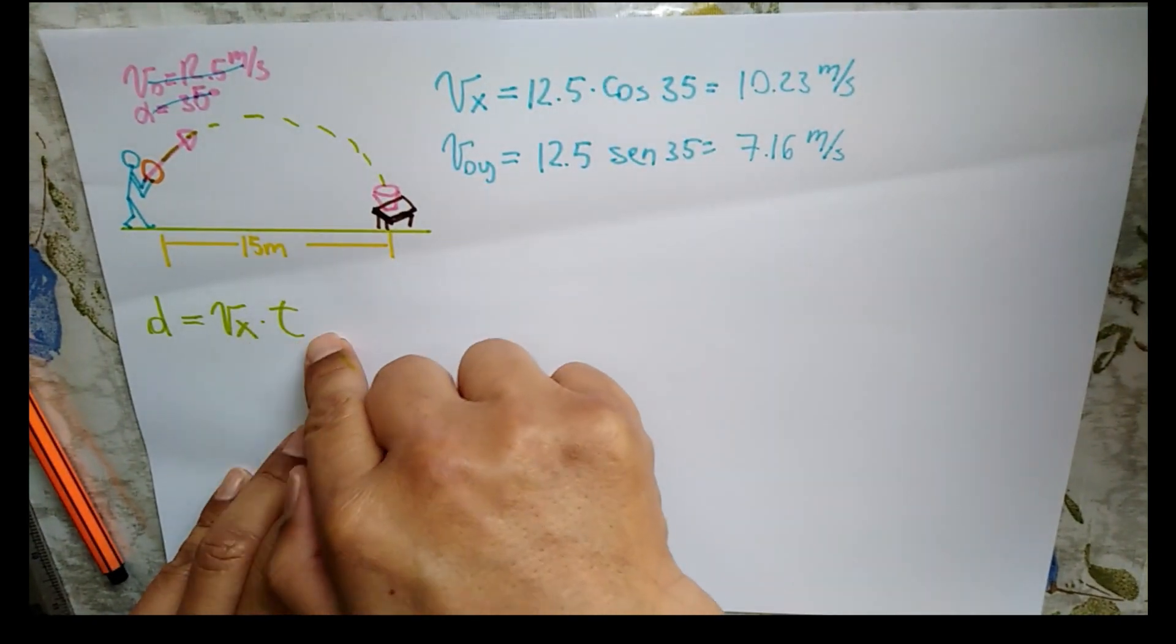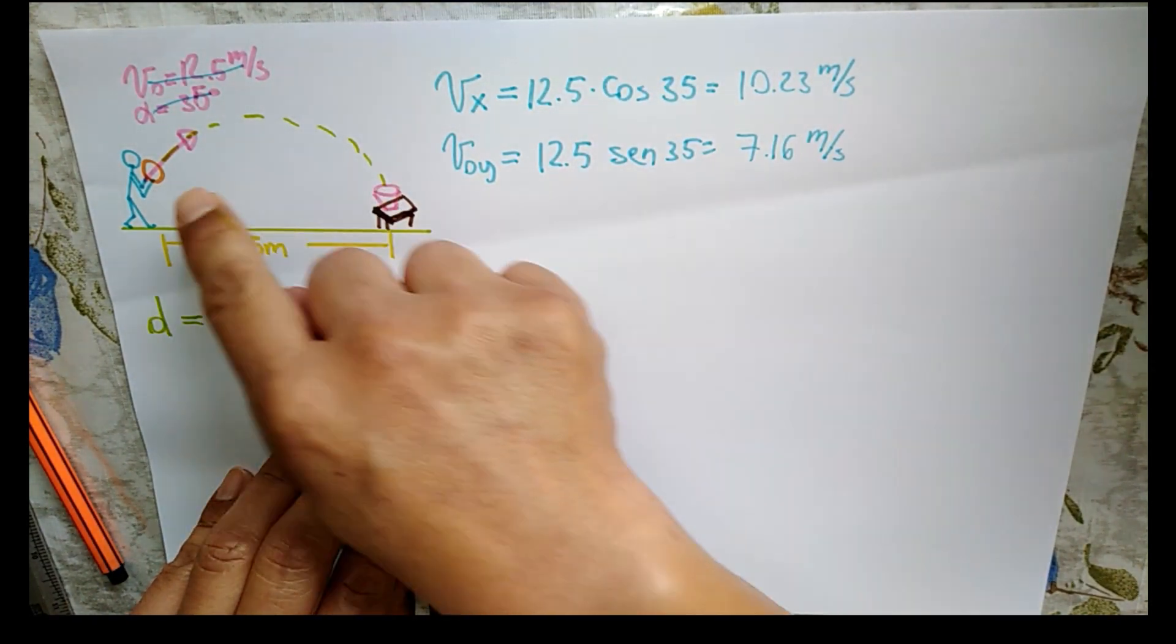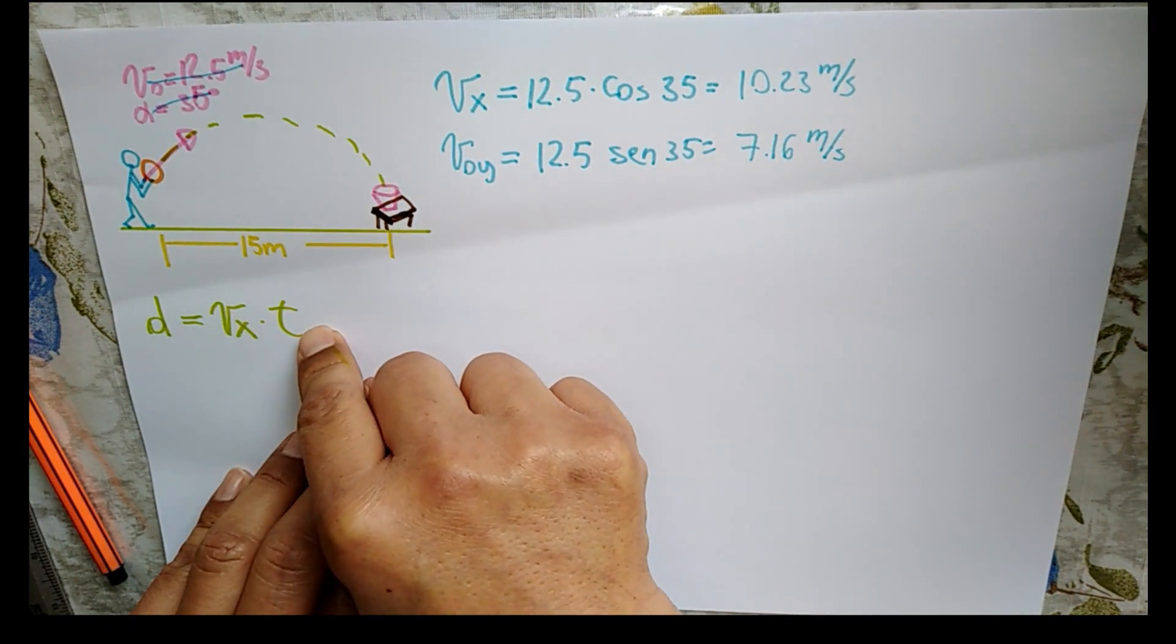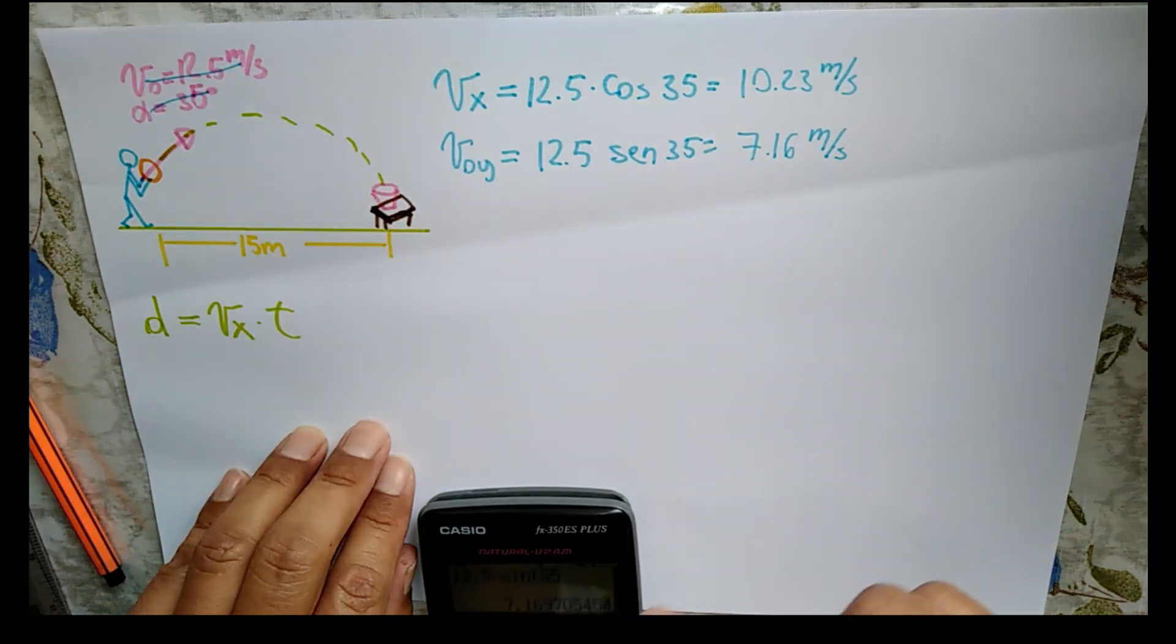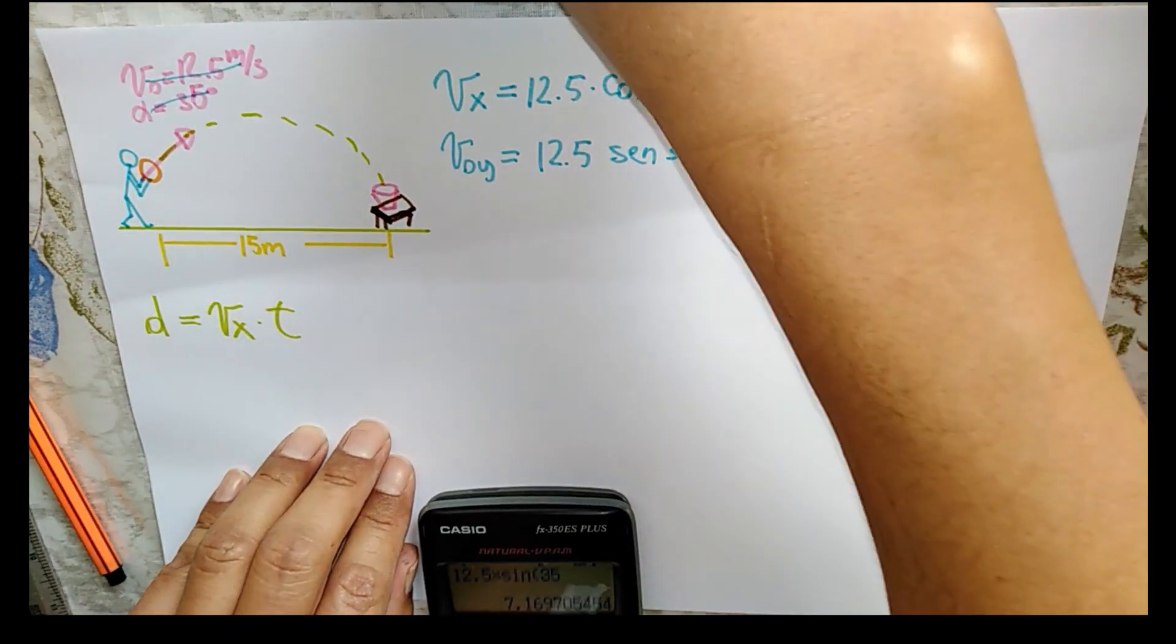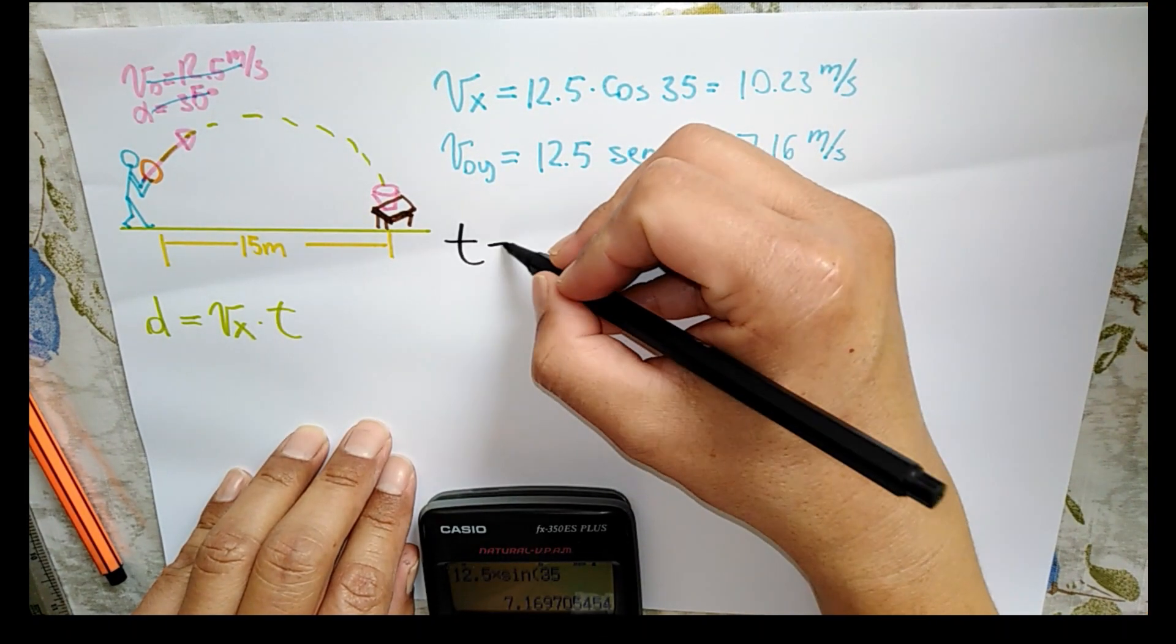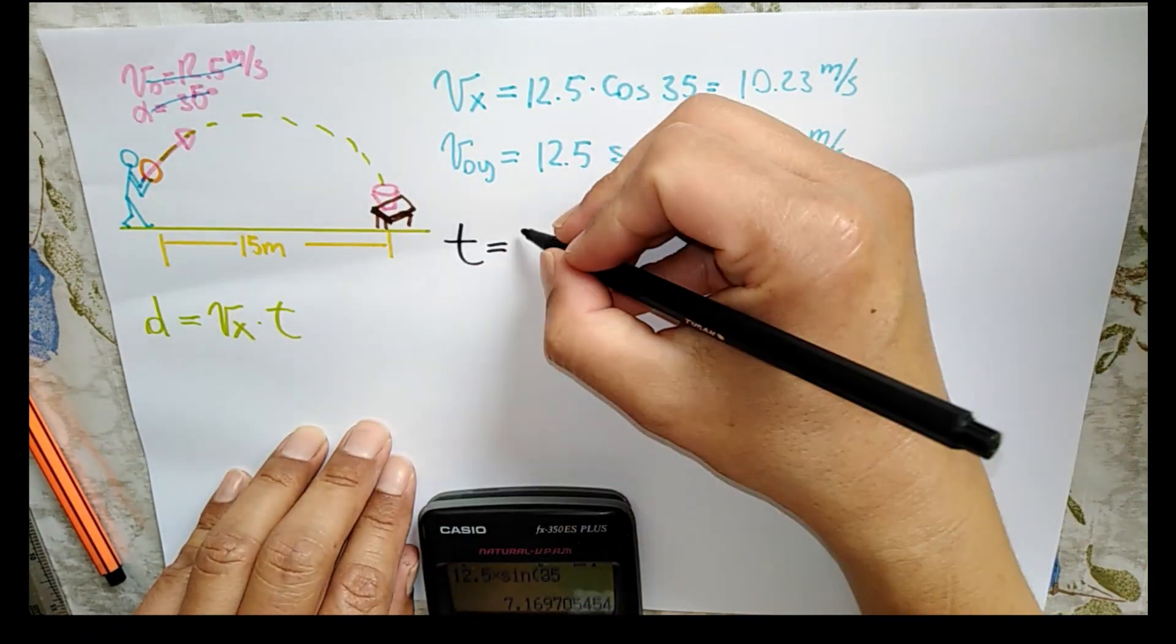Ahora ya tenemos la velocidad en X. Ahora el tiempo. Para calcular el tiempo, nosotros necesitamos el tiempo de vuelo, o sea, el tiempo que tarda la pelota en el aire. Entonces, para calcular ese tiempo de vuelo, necesito que calcule primero el tiempo que tarda en alcanzar la altura máxima. Entonces, ustedes saben que para eso necesitamos una ecuación.